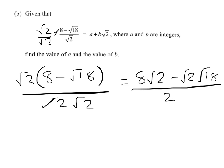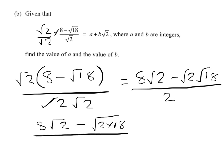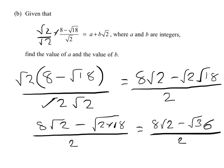I can't simplify the 8 root 2, so I leave that as 8 root 2. I can put the 2 and 18 together: 2 times 18, all over 2. Then we move that on to 8 root 2 minus root 36, all over 2.